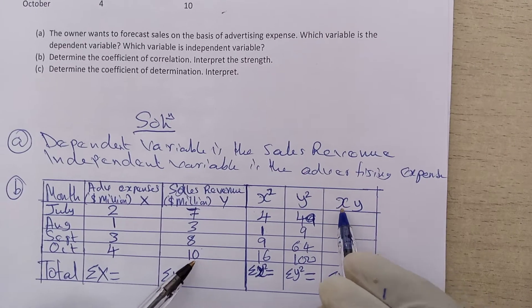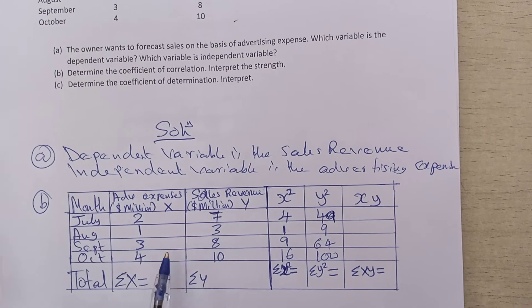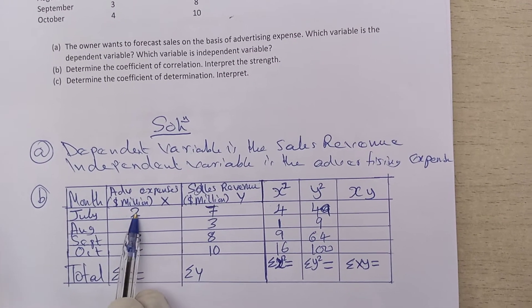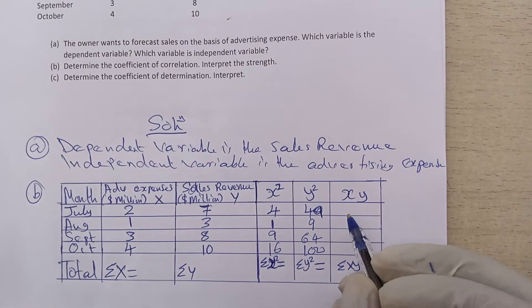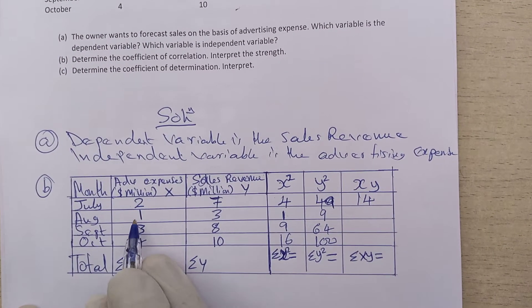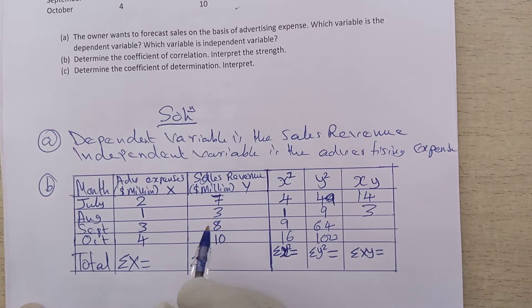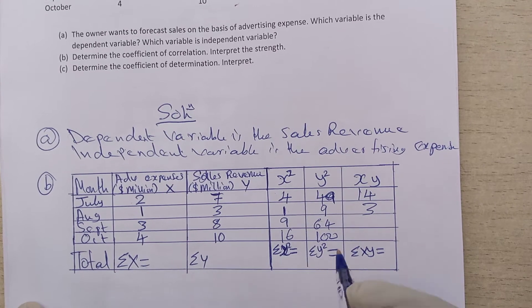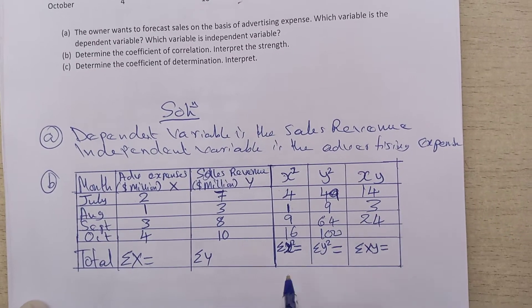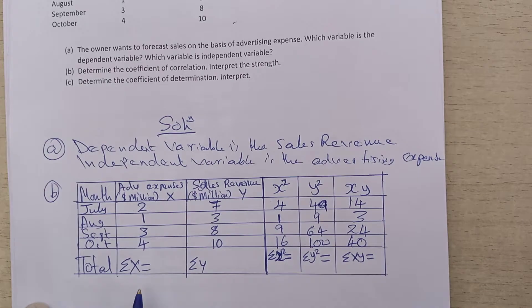When you find XY, it means each X times Y at the various levels. So two times seven is fourteen, one times three is three, three times eight is twenty-four, and four times ten is forty.